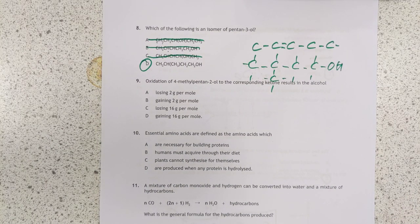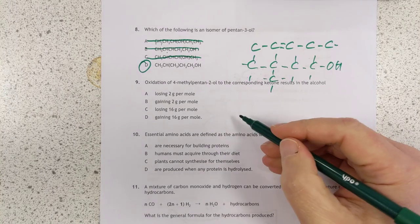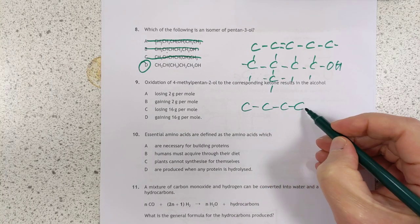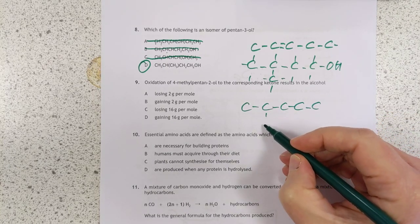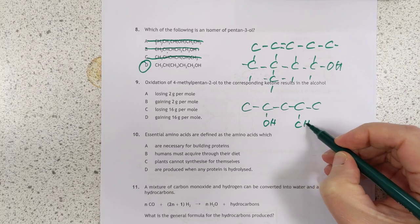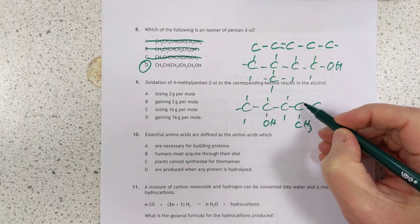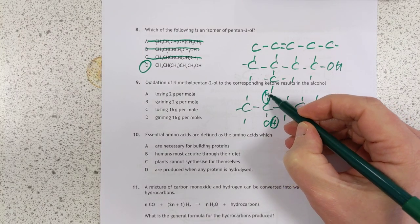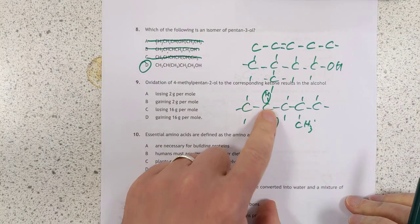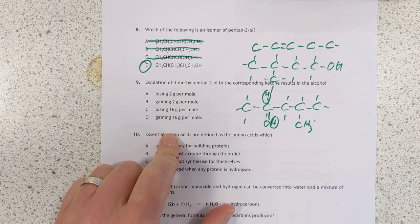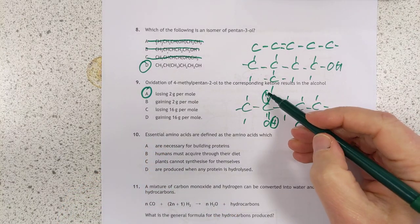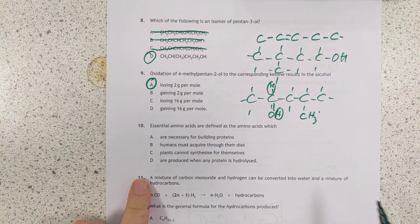Number 9. Oxidation of 4-methyl-pentan-2-ol to the corresponding ketone. You could draw this out if you fancy. 4-methyl-pentan-2-ol, and there's an OH on here, and a methyl on there. And if we convert it to a ketone, then we rip this hydrogen off, and we rip this hydrogen off, and we create a double bond. So we have lost two hydrogen atoms, which is the equivalent of 2 grams per mole. So 9A, because each hydrogen atom has got a GFM of 1.